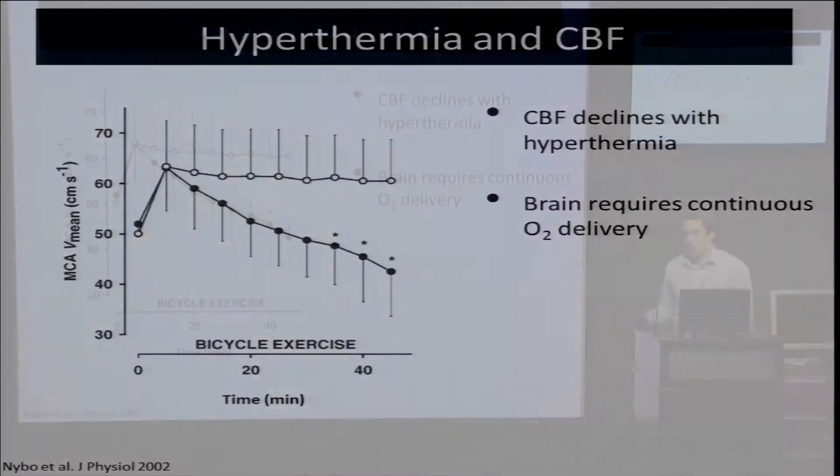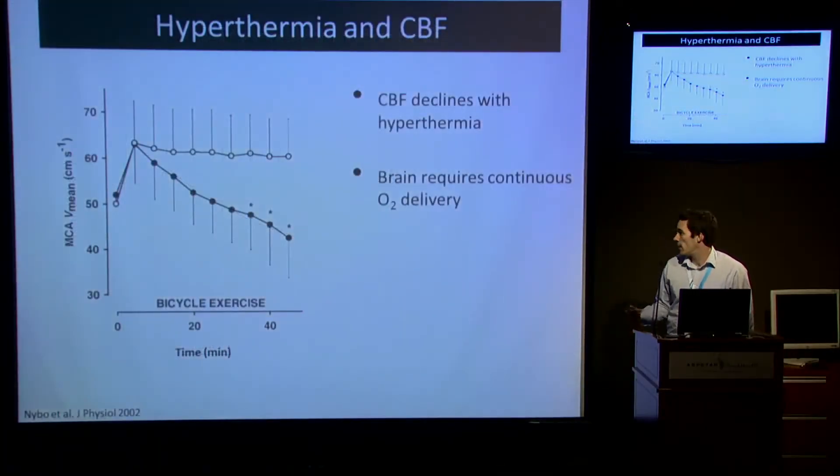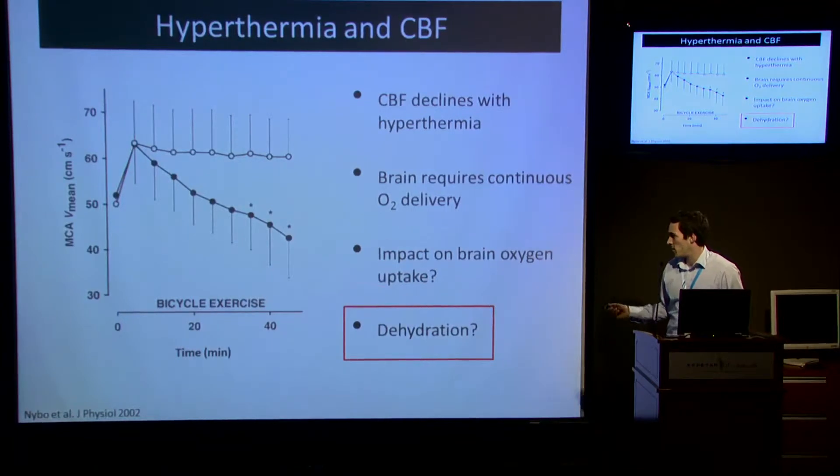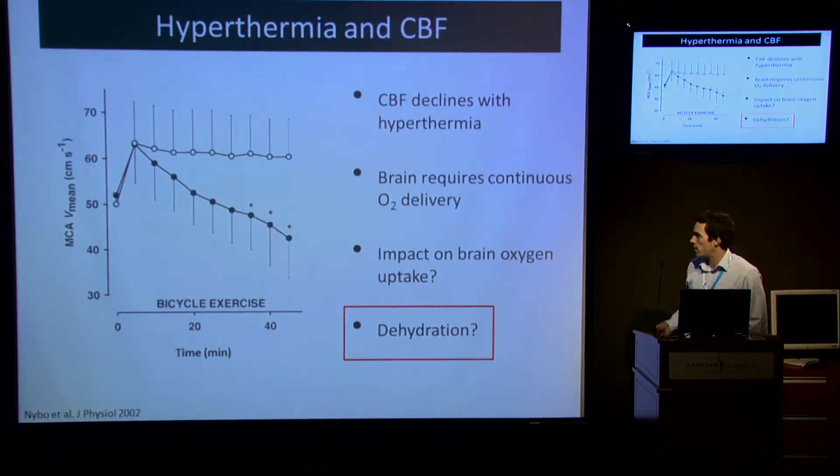It's clear that the brain requires a constant supply of oxygen delivery. There's not any capacity for storage of oxygen within the brain. So what about the impact on brain oxygen uptake itself? Jose has already presented some data from our maximal exercise data, but I'm going to look at dehydration during prolonged exercise in this trial.